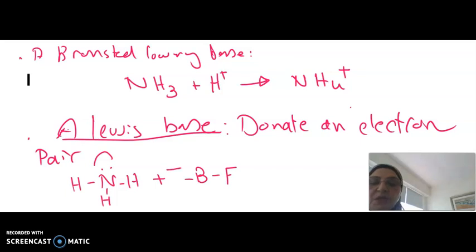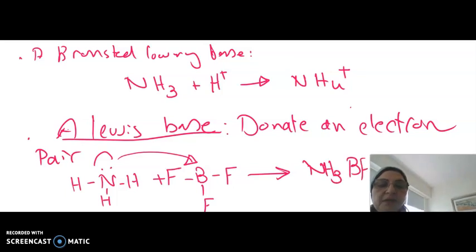It can donate it to an electron deficient species like BF3, because it does have a vacant orbital here. So ammonia will donate its electron pair, forming a coordinate bond. Then the molecule formed will be NH3BF3. And in this way, ammonia is described as a Lewis base. All right, thank you for your attention.